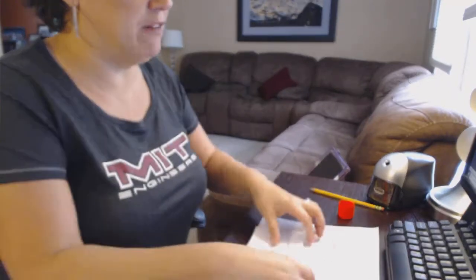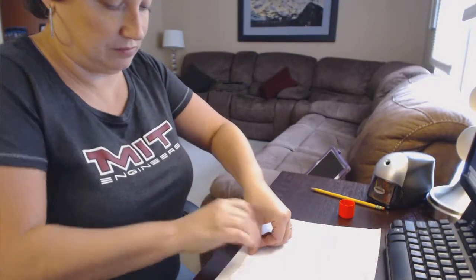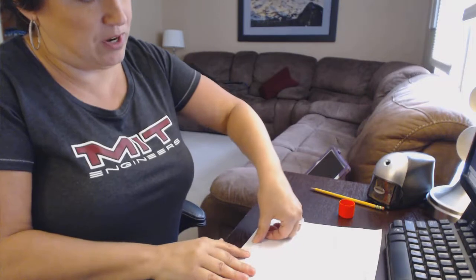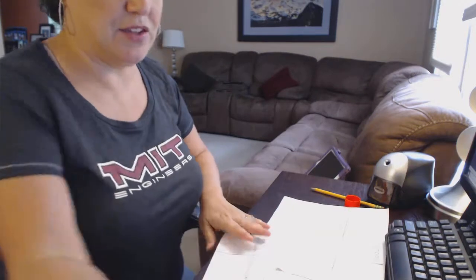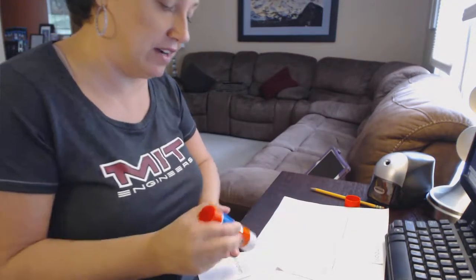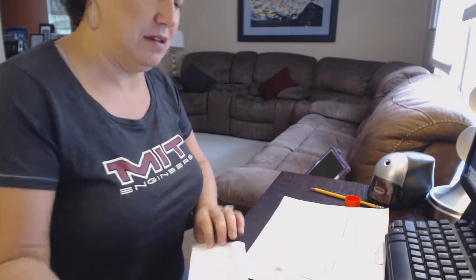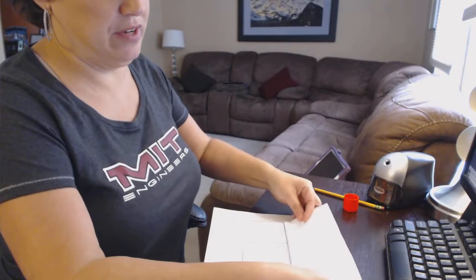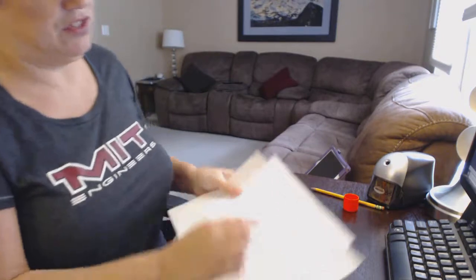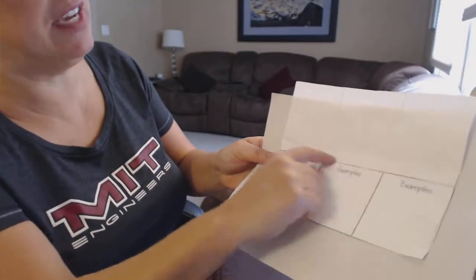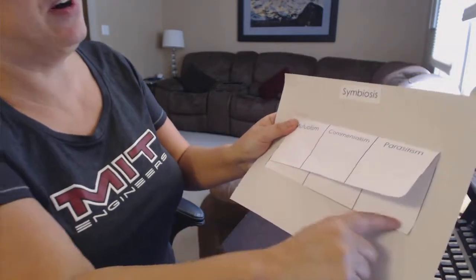We're going to fold along the dotted line at the top, and we're going to put glue along that skinny little edge so that we can glue it down above our examples. You're going to glue it right here — line it up with the very top edge of your examples, and then it's going to fold down over top so that you can see the bottoms.